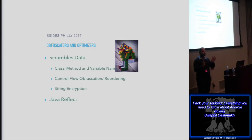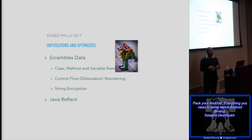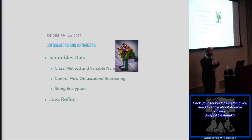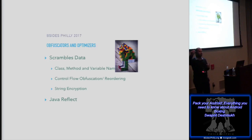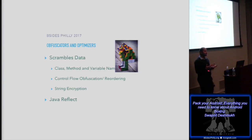There are a few hardening techniques to cover. Obfuscators are one - the easiest to bypass. They will scramble your data: class names, method names, or variable names get mangled. For example, a package like com.bsidephilly2017 gets changed to com.a. They also use control flow obfuscation where if-statements or try-catch statements are changed to switch statements with a lot of dead code inserted. This makes it very difficult to set breakpoints, as you have to traverse through different call functions that return null values because they're dead code.